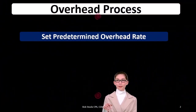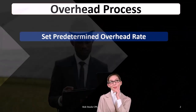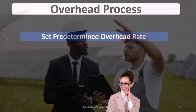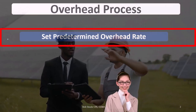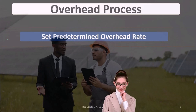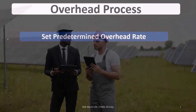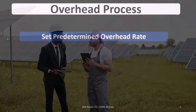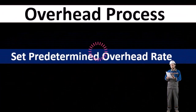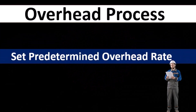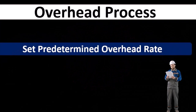First we want to take a look at the process for recording overhead. The process of allocating overhead to jobs is a bit more complex than the allocation of direct labor and direct materials. First, we're going to set up a predetermined overhead rate. This predetermined overhead rate will help us assign what's in overhead to particular jobs — it'll help us move costs from overhead to particular jobs. We need to do it at the beginning of the process so we can then use it to allocate overhead to jobs as we go through the current time period.